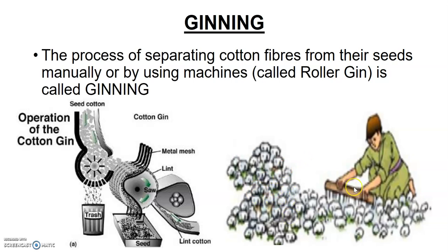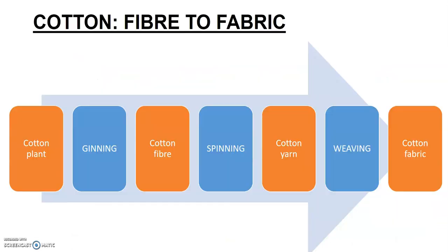This picture is also given in NCERT — you can see that a person is manually removing seeds from the cotton fiber. The process of obtaining fiber free of seeds is called ginning. This can be done manually, or with a machine called a roller gin, which removes the seeds while the cotton lint — the cotton fiber — passes to the other side. So ginning is the process of separating cotton seeds from its fiber.